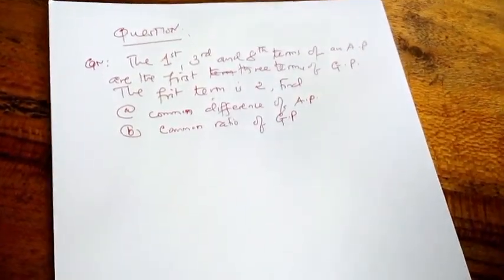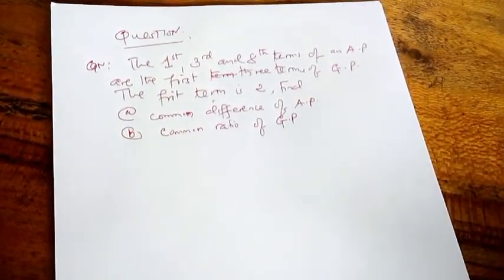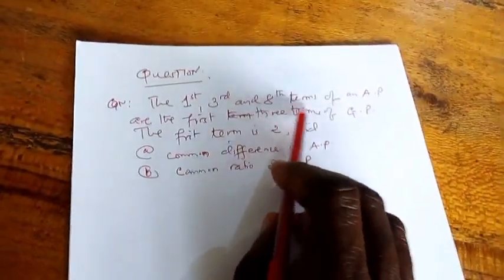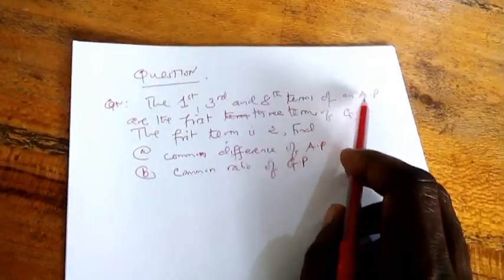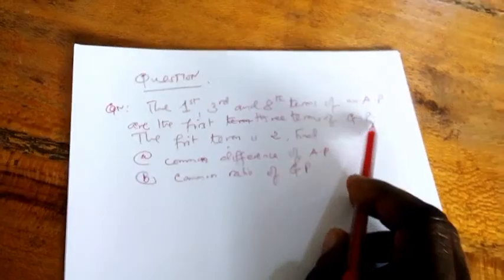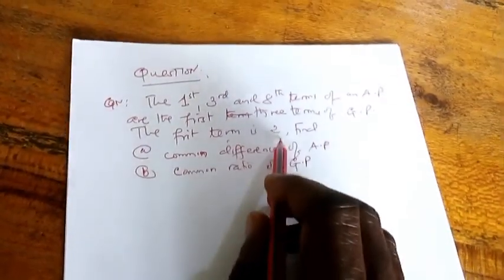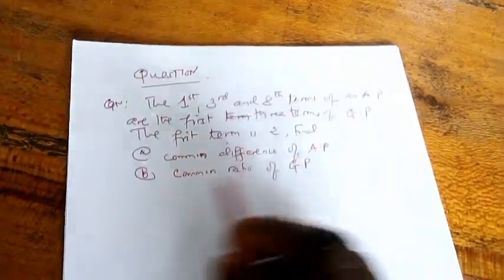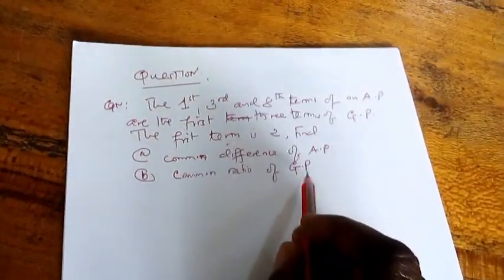Let us go directly to the question. The question states that the first term, the third term, and the eighth term of an arithmetic progression are the first three terms of GP. The first term is equal to two. Find the common difference of arithmetic progression and the common ratio of geometric progression.